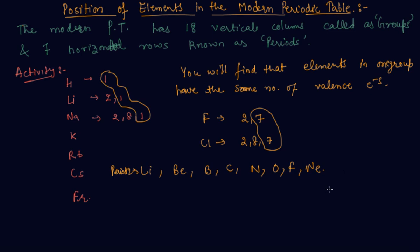If you write down the atomic electronic configuration, you will find that these elements do not have the same number of valence electrons, but they contain the same number of shells.